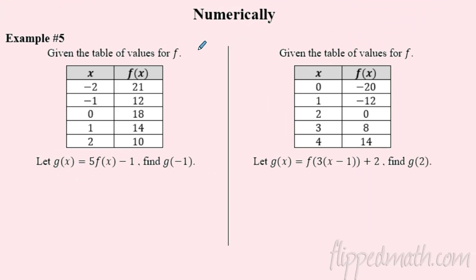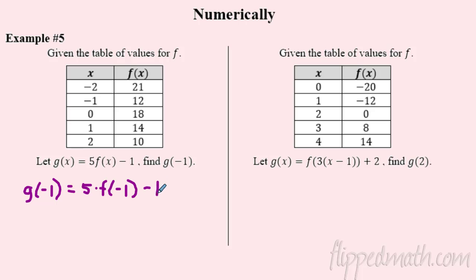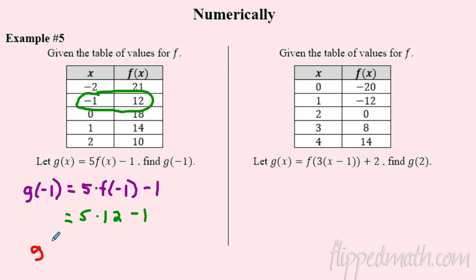Now let's do it numerically using a table of values. I want to find g(−1) given a vertical dilation of five and a vertical shift down one. Plug and chug: g(−1) = 5 · f(−1) − 1. Looking up f(−1) in the table gives 12. So g(−1) = 5 · 12 − 1 = 60 − 1 = 59.